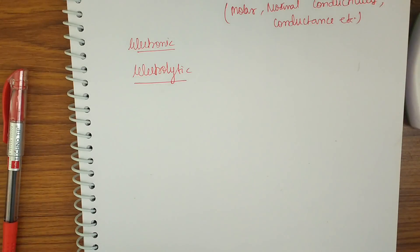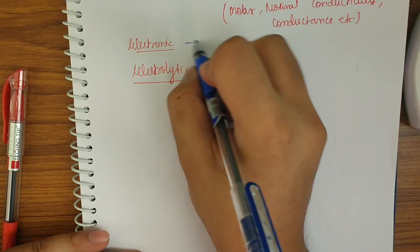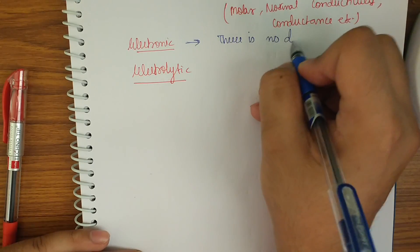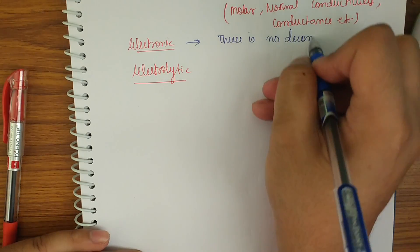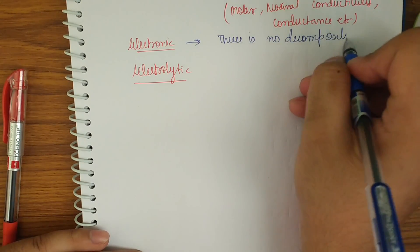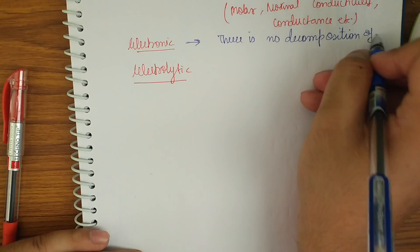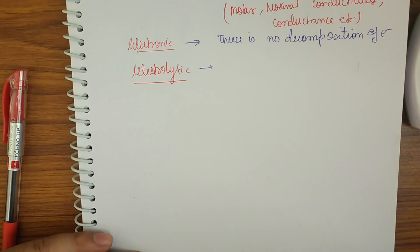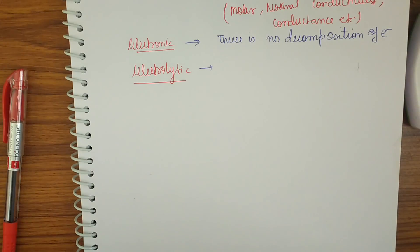Let us decide the difference between electronic and electrolytic conductors. In electronic conductors, there is no decomposition. The electrons are the charge carriers. So there is no decomposition of electrons — hence these are called electronic conductors.